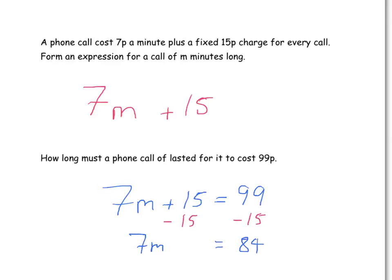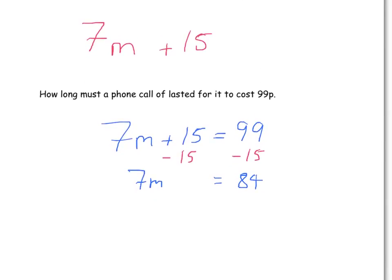Next thing, we've got 7 times m equals 84. Well, what's the inverse or the opposite to times by 7? It's dividing by 7. So we're going to divide both sides by 7, which leaves us with 1m is equal to 84 divided by 7, which is 12. So a call of length 12 minutes would cost 99p.